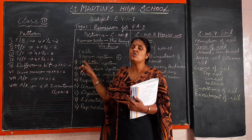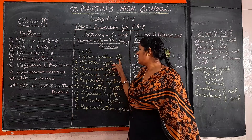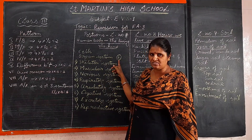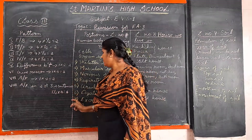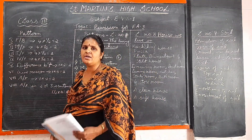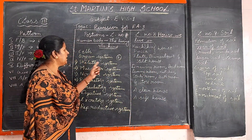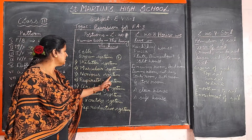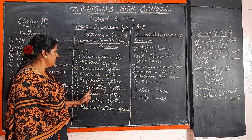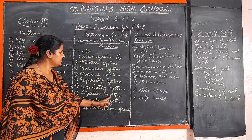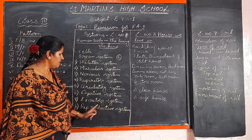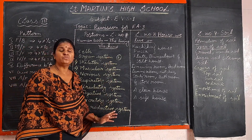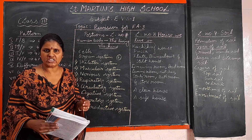We are going to study about the organ systems: skeletal system, muscular system, nervous system, respiratory system, digestive system, and circulatory system. Each system performs different types of functions.